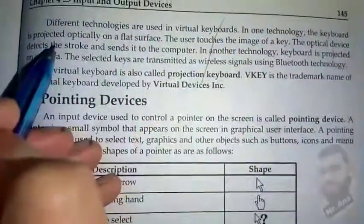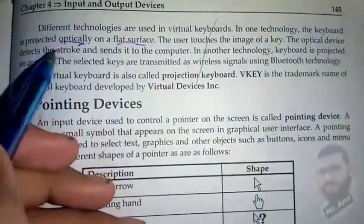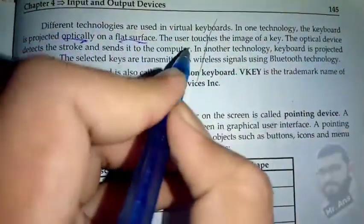In one technology, the keyboard is projected optically on a flat surface. The user touches the image of the key, the optical device detects the stroke, and sends it to the computer.